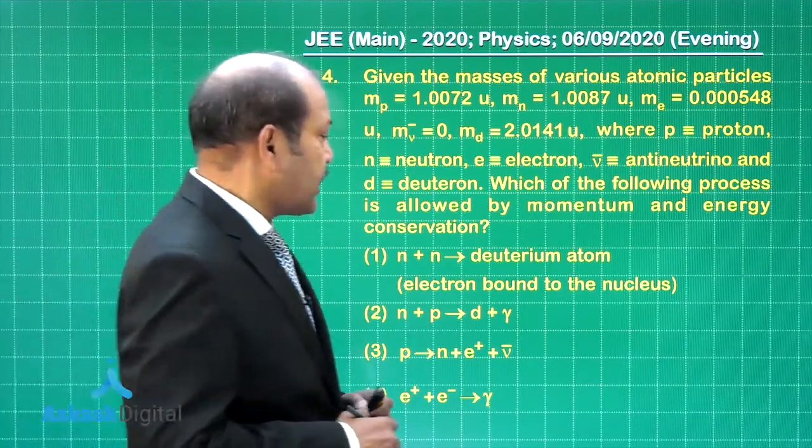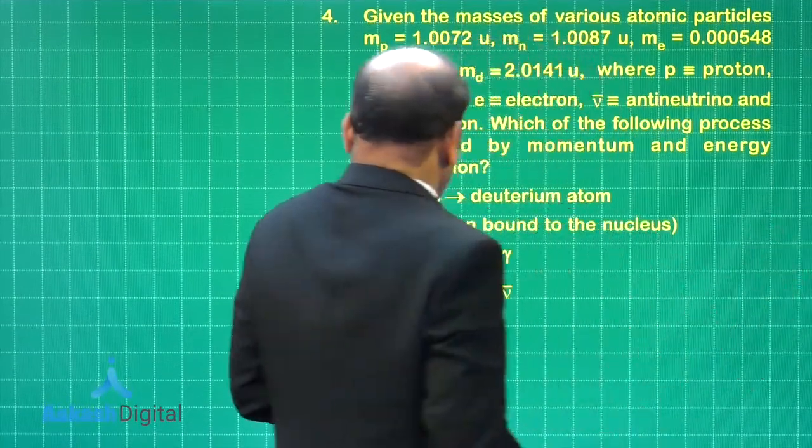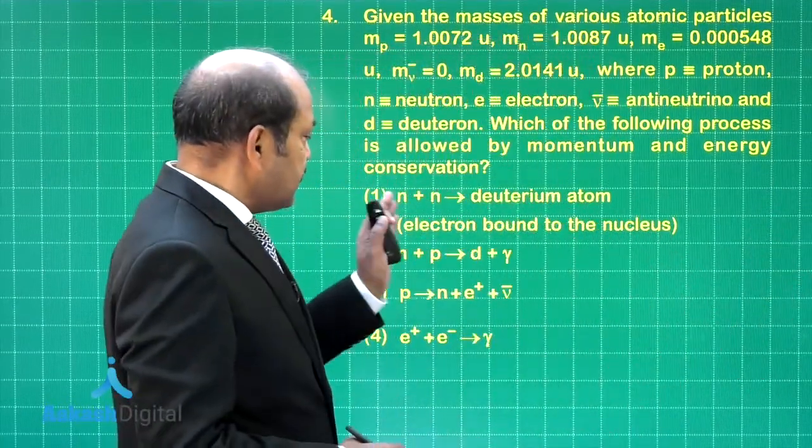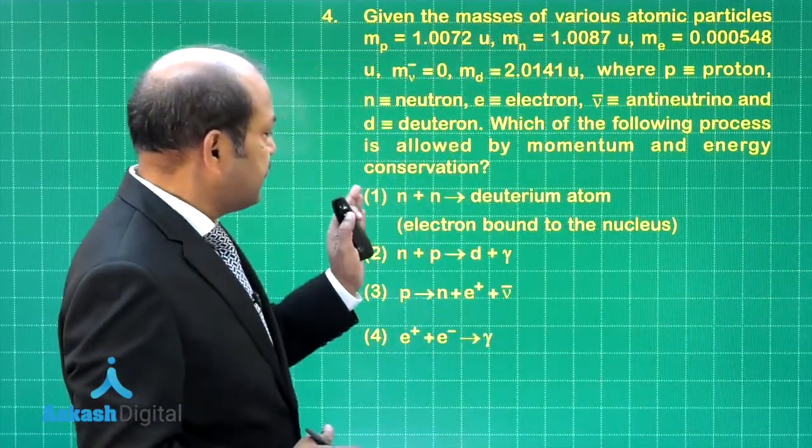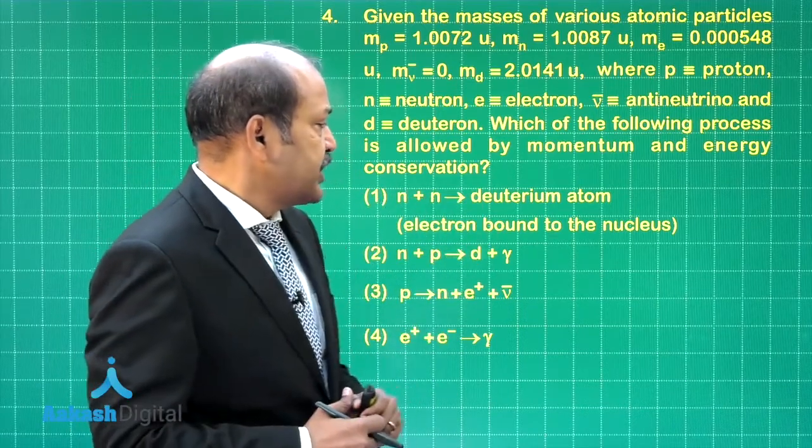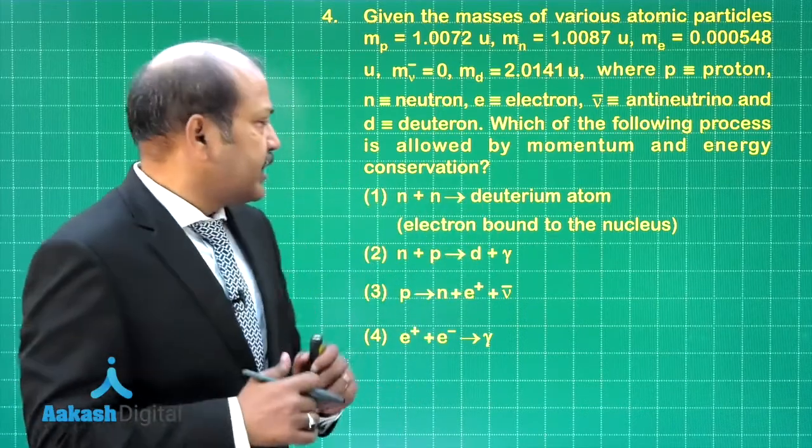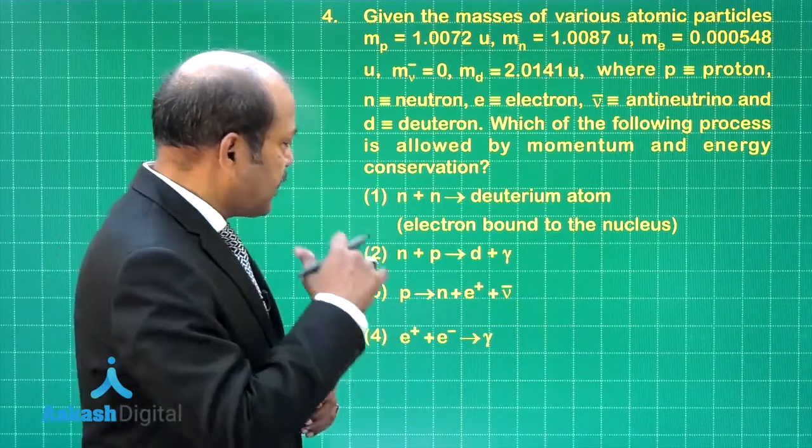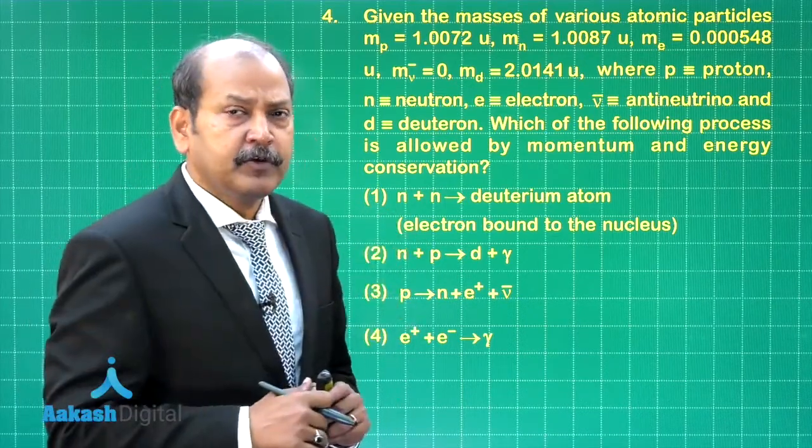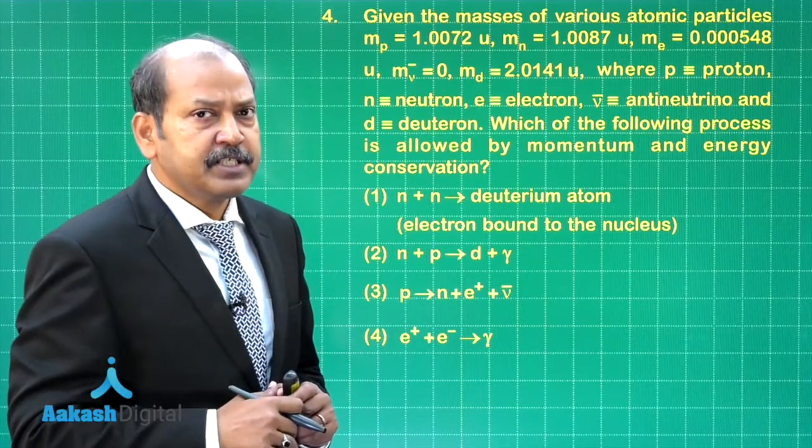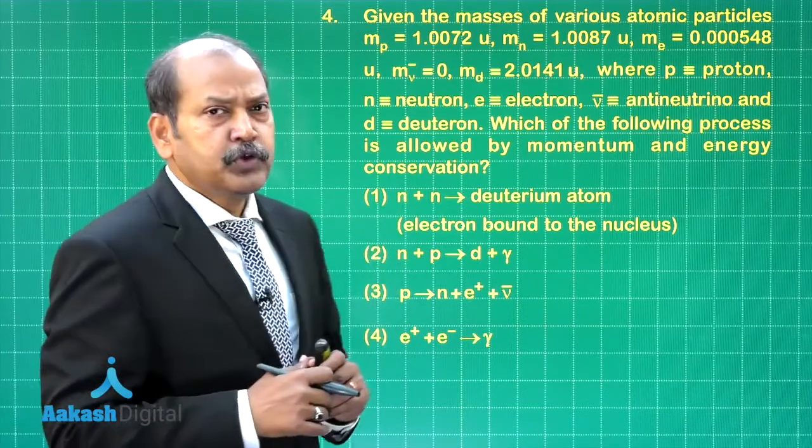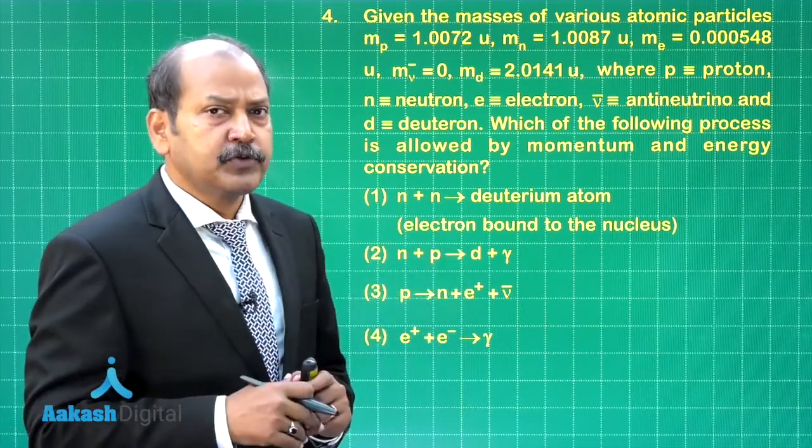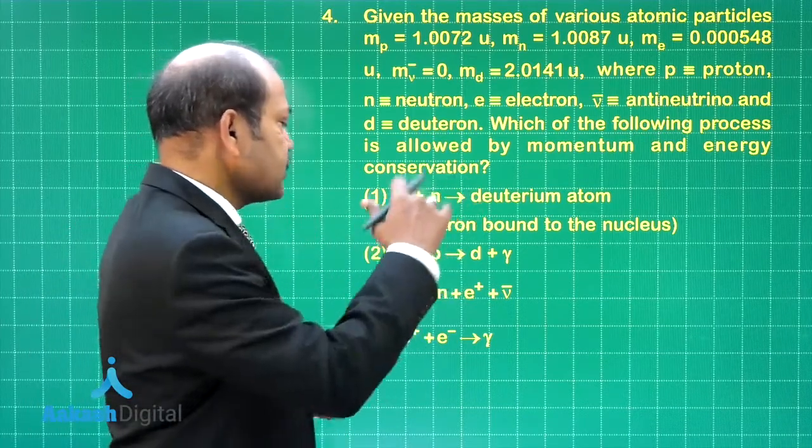Let us look at the options. If you look at the very first option, we have n plus n giving deuterium. This reaction is not possible because of consideration of Pauli's exclusion principle. So that is why two neutrons, they do not fuse together as such. So this reaction is ruled out.